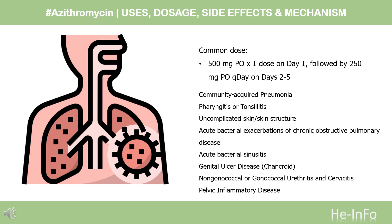For uncomplicated skin and skin structure infections due to Staphylococcus aureus, Streptococcus pyogenes, or Streptococcus agalactiae: 500 mg PO x1 dose on day 1, followed by 250 mg PO daily on days 2 to 5. For acute bacterial exacerbations of chronic obstructive pulmonary disease due to Haemophilus influenzae, Moraxella catarrhalis, or Streptococcus pneumoniae: 500 mg PO daily for 3 days, or alternatively, 500 mg PO x1 dose on day 1 followed by 250 mg PO daily on days 2 to 5.